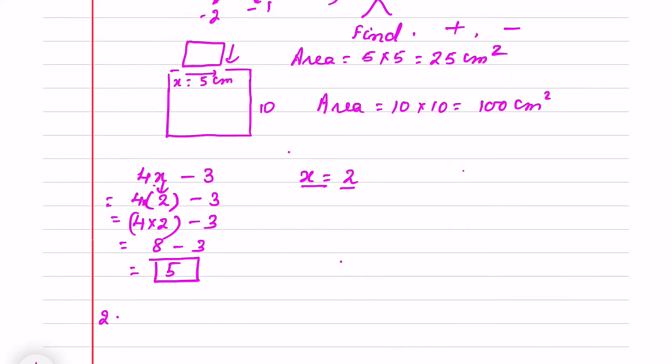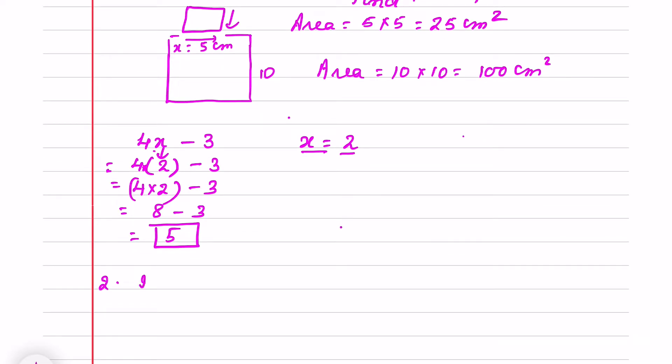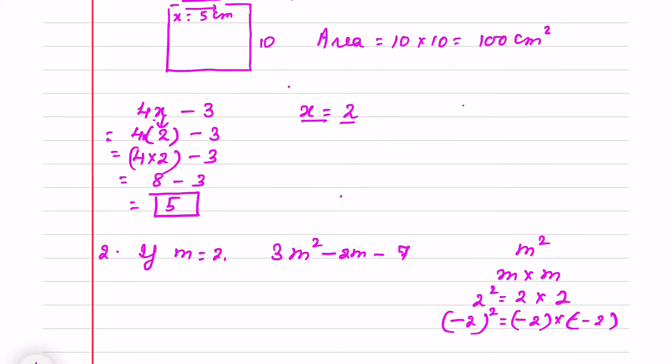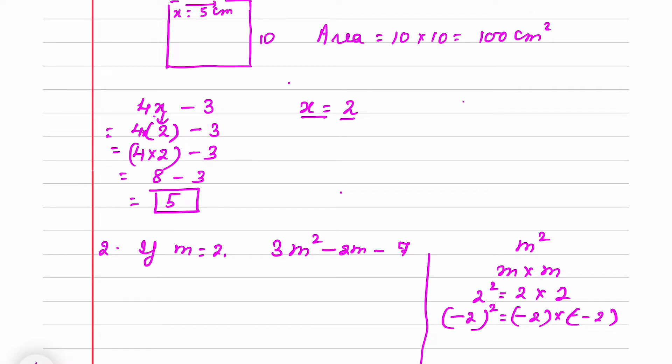Suppose I take another question. If m is 2 find out the value of 3m square minus 2m minus 7. So what does it mean m square? m square means m into m. 2 square means 2 into 2. Minus 2 square means I will multiply it 2 times. We have done exponent that we multiply it 2 times. Same thing we will apply here.